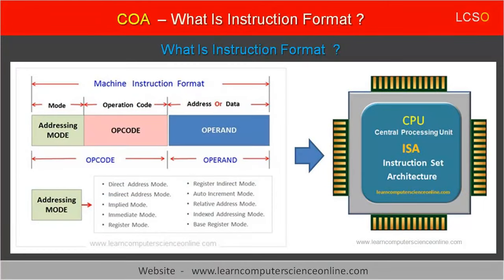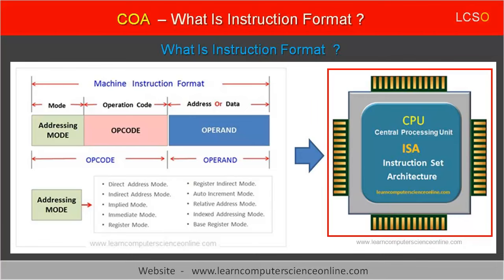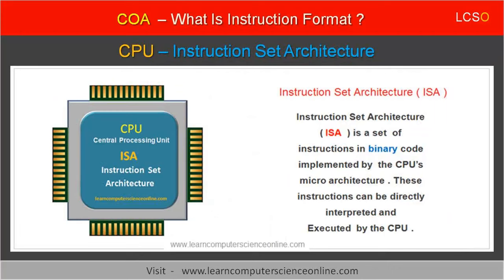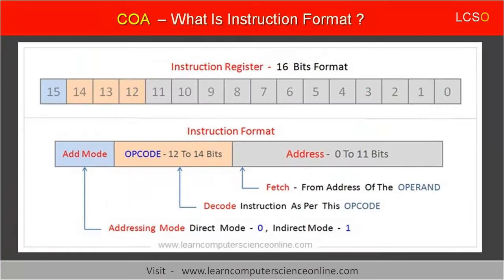At this stage, the concept of instruction set architecture of the CPU also comes into picture. Each microprocessor architecture implements a specific instruction set architecture, and therefore the processor can support only machine instructions that can be mapped to its instruction set architecture commands. In simple words, the instruction format helps the CPU to find out which operation is to be performed, where the data is located, and how to reach the data.